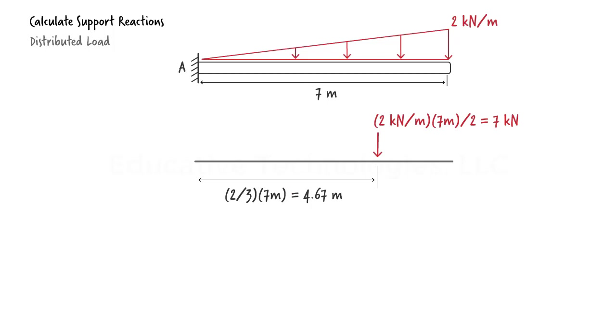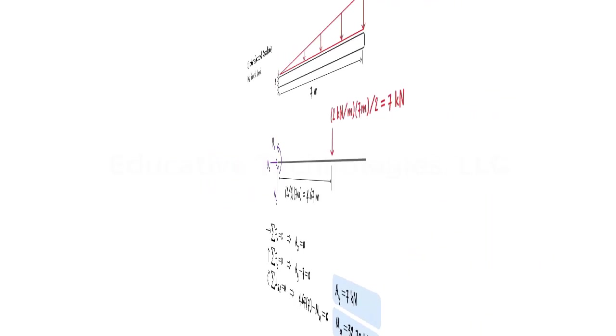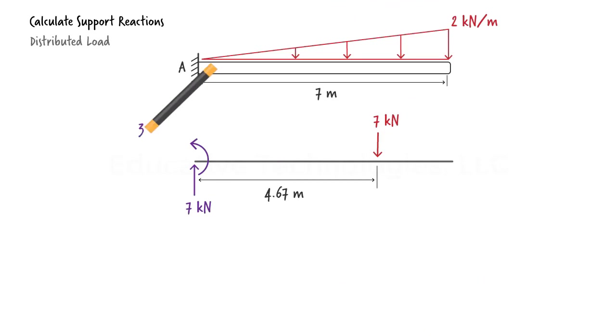The diagram shows the support reactions at A as unknown forces. Here are the equilibrium equations. And here is the solution. There is an upward reaction force of 7 kN and a counterclockwise moment of 32.7 kN meters at A.